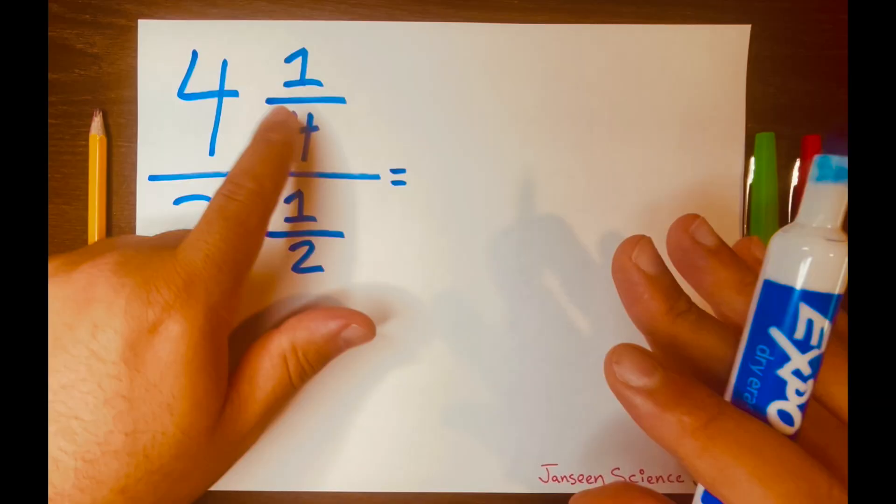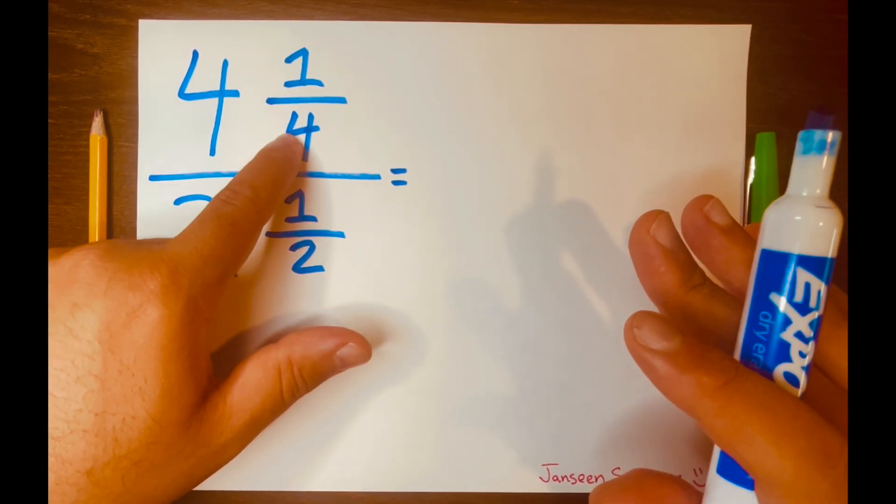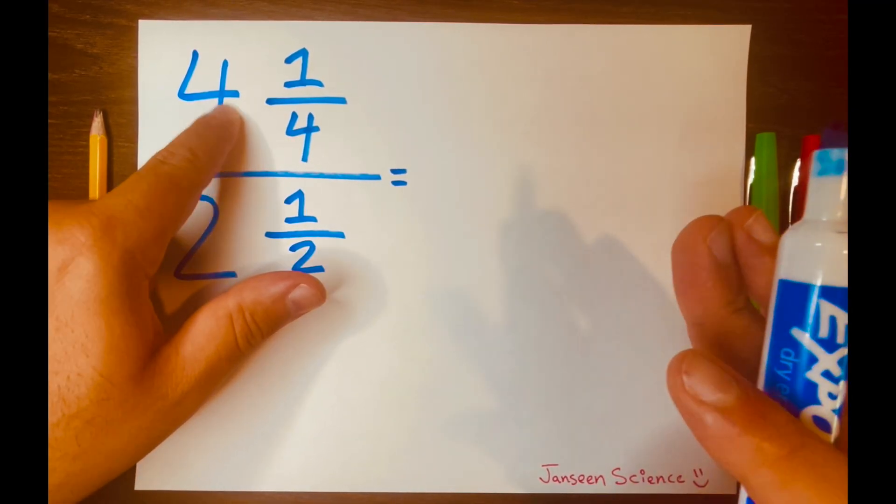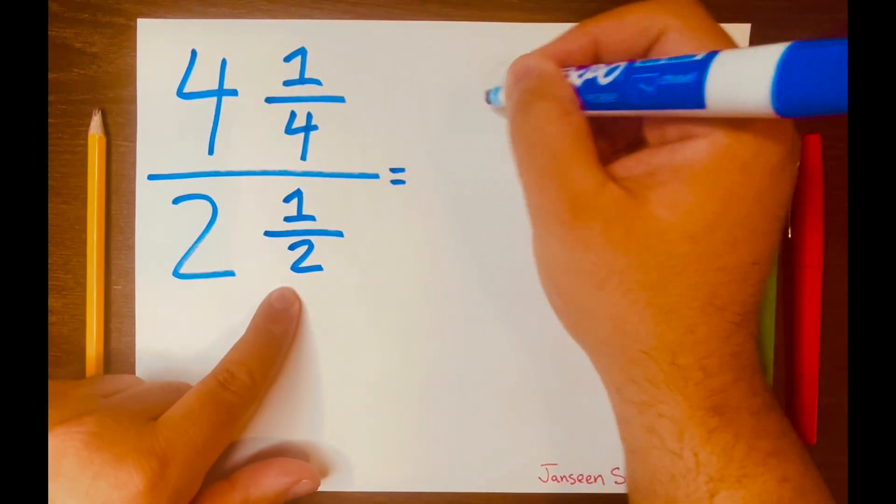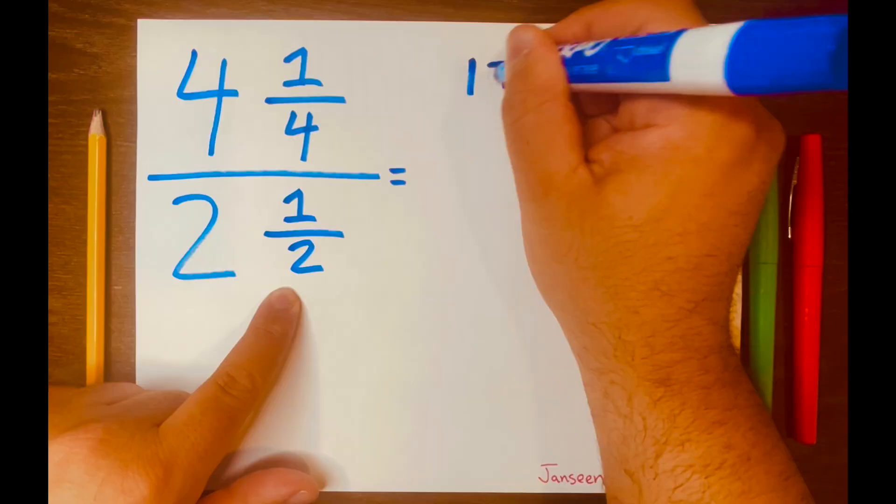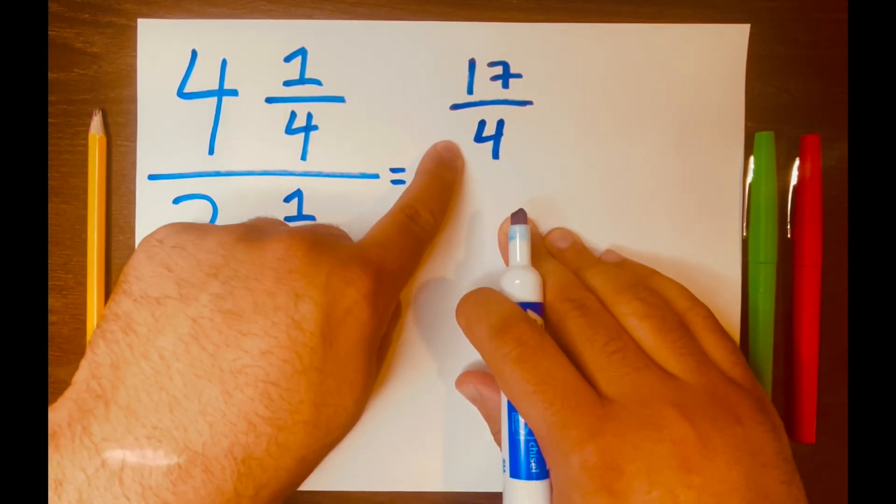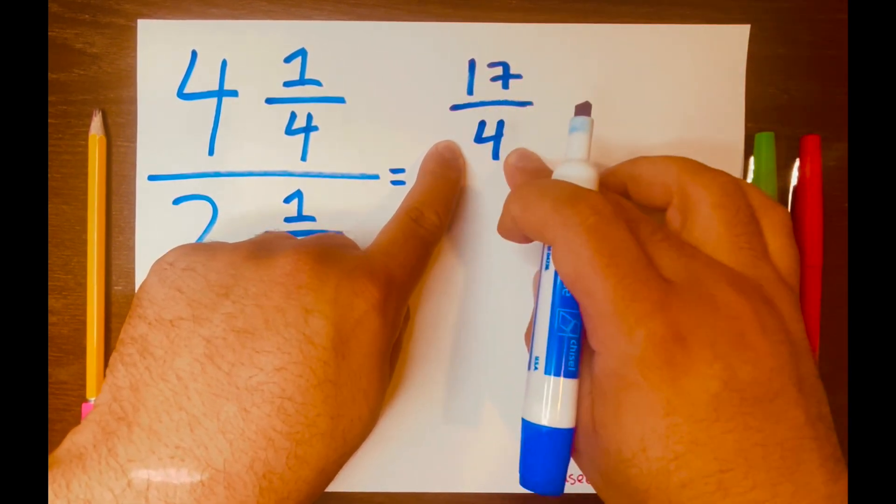So let's go ahead and turn this mixed number into an improper fraction. So 4 times 4 is 16, plus 1 is 17, and I'll write it here: 17 over 4. That is our improper fraction because the top number is bigger than the bottom number.